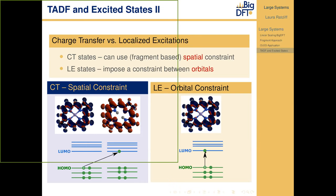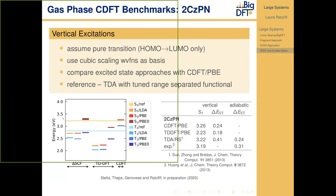Since we need to treat both charge transfer and local excitations in TADF molecules, the question is can we do something for locally excited states. In the charge transfer case we impose a spatial constraint, moving electrons from one spatial region to another. For locally excited states we have been implementing a new method where we impose a constraint between orbitals — moving one electron from the HOMO into the LUMO — as our definition of the constraint. We are still doing benchmarks, but for the 2CZPN molecule, comparing constrained DFT with PBE against delta-SCF and TDDFT with various functionals.